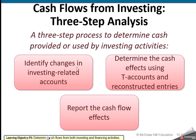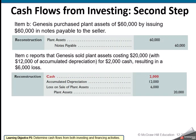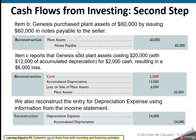Our three-step analysis for investing: we identify the changes in the investing-related activities — all of our long-term assets. We determine those cash effects maybe by using T-accounts or reconstructing the entries, and then we put them onto the cash flow statement. We look at our plant assets and see it increased $400,000. Then we look at accumulated depreciation — that increased $12,000. But we take it one step further to ask: was there any asset sale? They tell us they purchased plant assets of $60,000 by issuing a note — that's a non-cash investing and financing activity. But they also sold assets costing $20,000 that had $12,000 of accumulated depreciation for $2,000 cash.